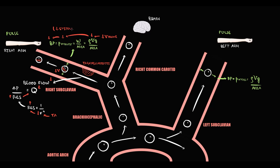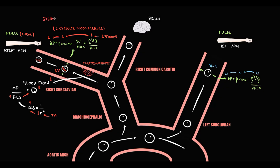So Takayasu Arteritis causes decreased systolic blood pressure in the right arm, and decreasing blood supply to the right arm causes weakening of the pulse. But blood income to the left arm remains the same, so blood pressure on the left arm remains normal. If previously blood pressure on both arms was equal, now with an affected right subclavian artery, blood pressure on the right arm becomes lower while blood pressure on the left arm remains the same. We call this symptom systolic blood pressure difference in arms.